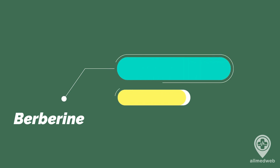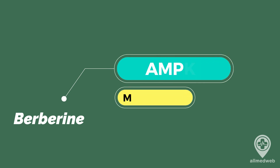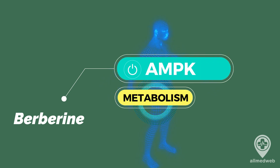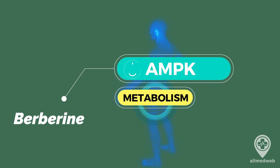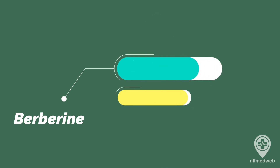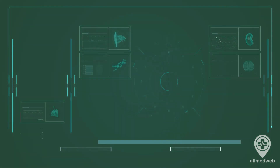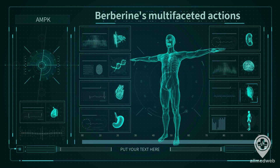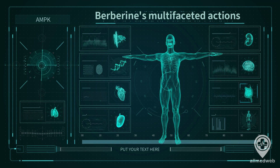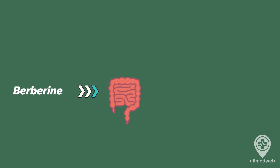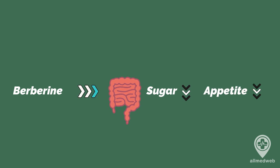Berberine interacts with several systems within our body by triggering the enzyme AMP-activated protein kinase, or AMPK, which aids in regulating metabolism and influences blood sugar levels. This activation essentially initiates multiple routes within the body to manage blood sugar. Berberine can also decelerate carbohydrate digestion in the gut, potentially lowering blood glucose levels and decreasing appetite.